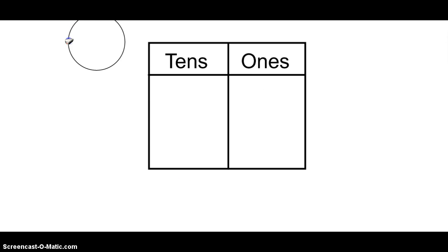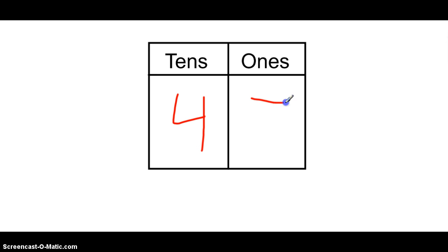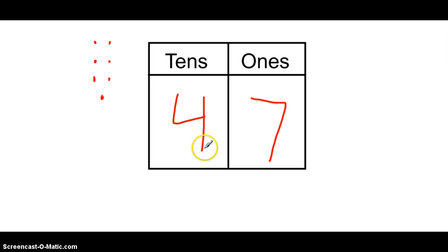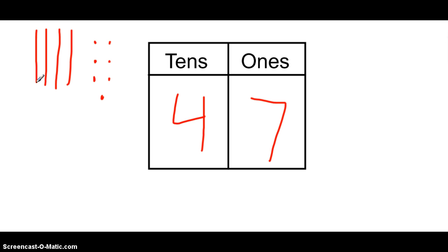Let's try another one. The next number I'd like you to represent using tens longs and ones cubes is the number 47. Pause the video and use your whiteboard to show me the number 47. We need seven ones and four tens. I've just represented the number 47.